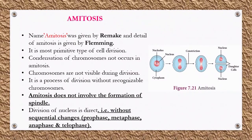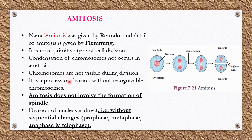The next topic is amitosis. The name amitosis was given by Remak, and the details were provided by Fleming. It is the most primitive or basic type of cell division. Condensation of chromosomes does not occur, so chromosomes are not visible during this type of division. It is the process of division without recognizable chromosomes. Amitosis also does not involve the formation of a spindle fiber.